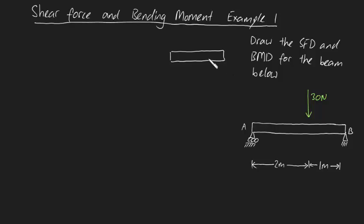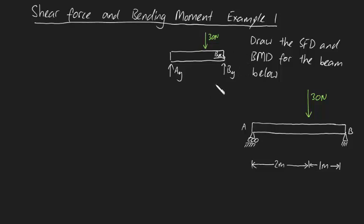The forces on the entire bar will be this 30 Newton force, and you're also going to have reaction forces at A and B. A is a roller, so you're going to have just a vertical force AY. But B is a pin support, so you're going to have reaction forces BY and BX. Now, using our equilibrium equations, the sum of forces in the X direction is equal to zero, so right off the bat you can tell that BX must be equal to zero.